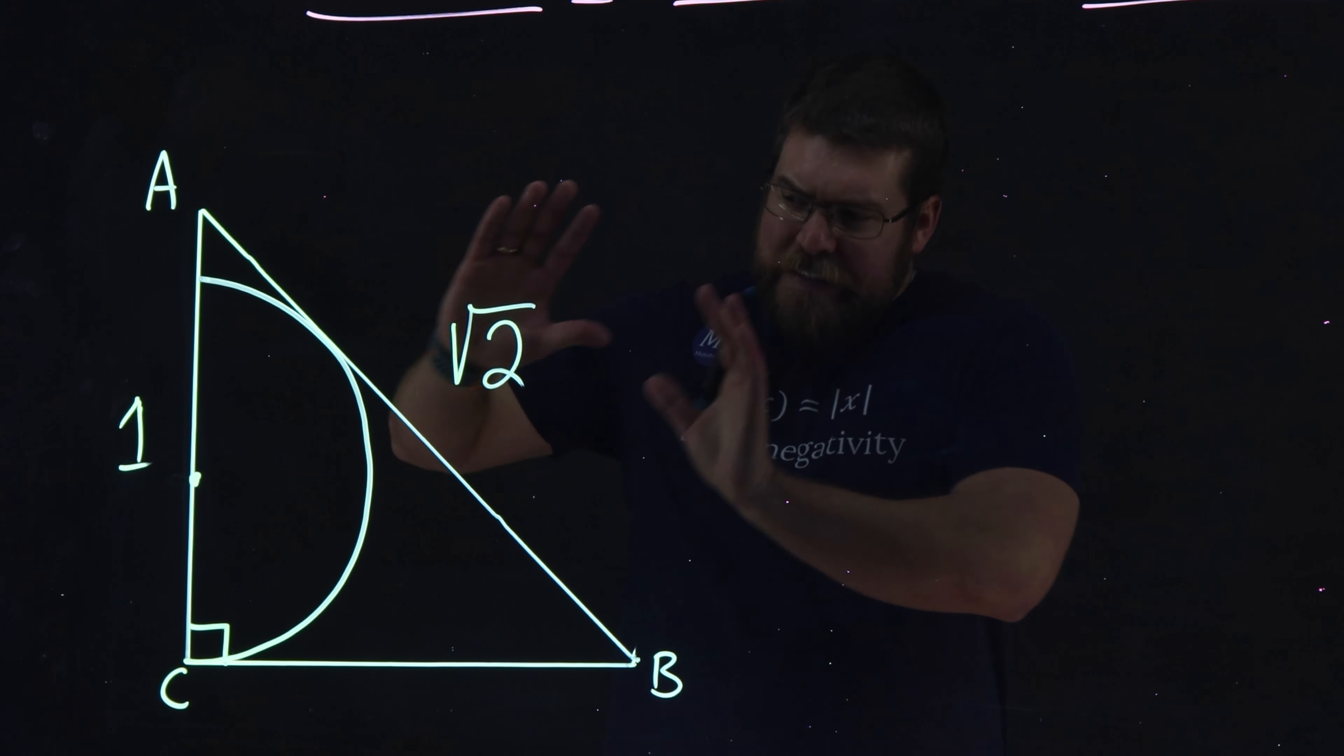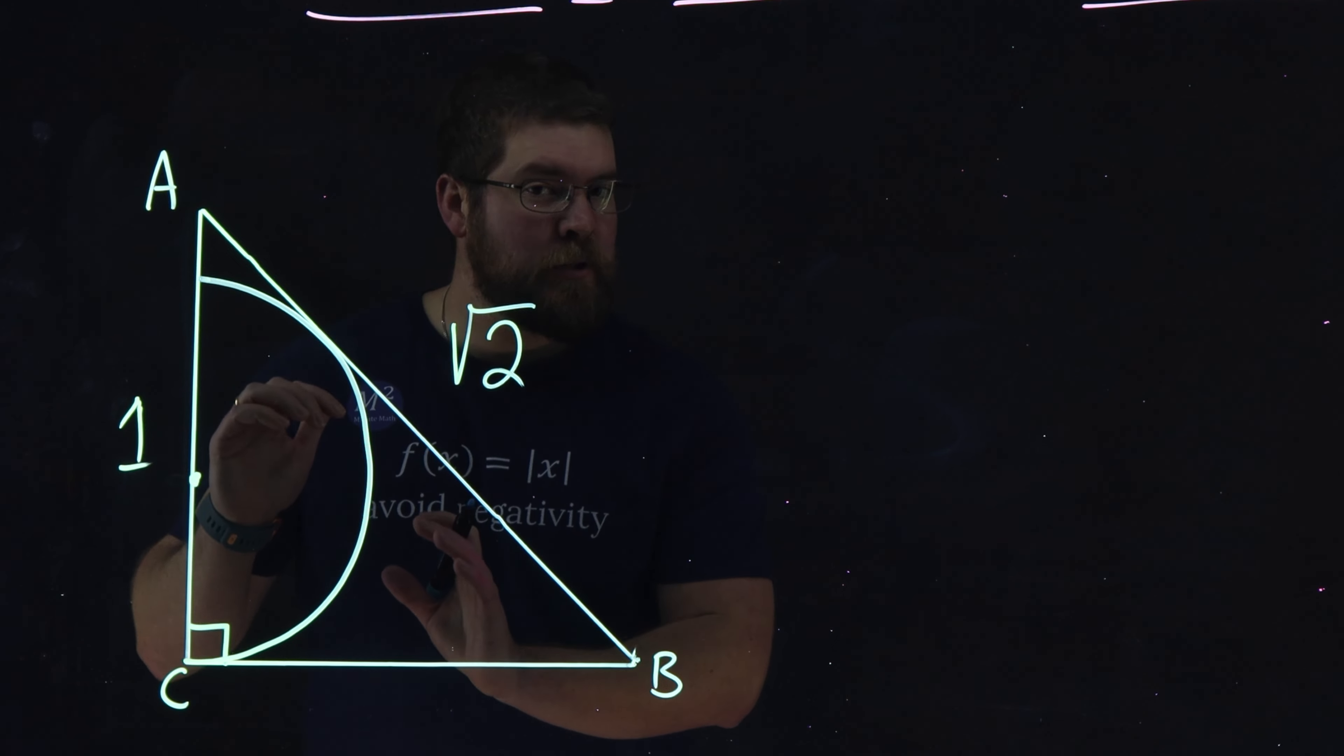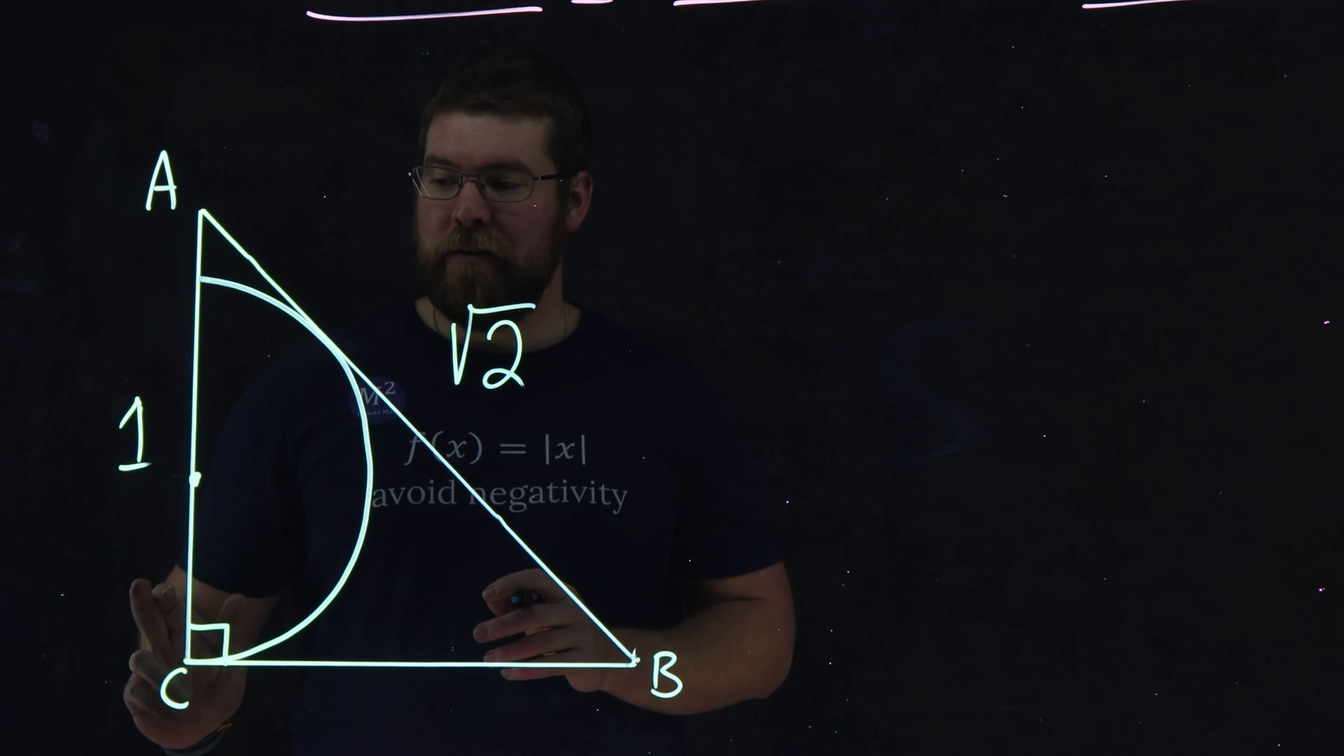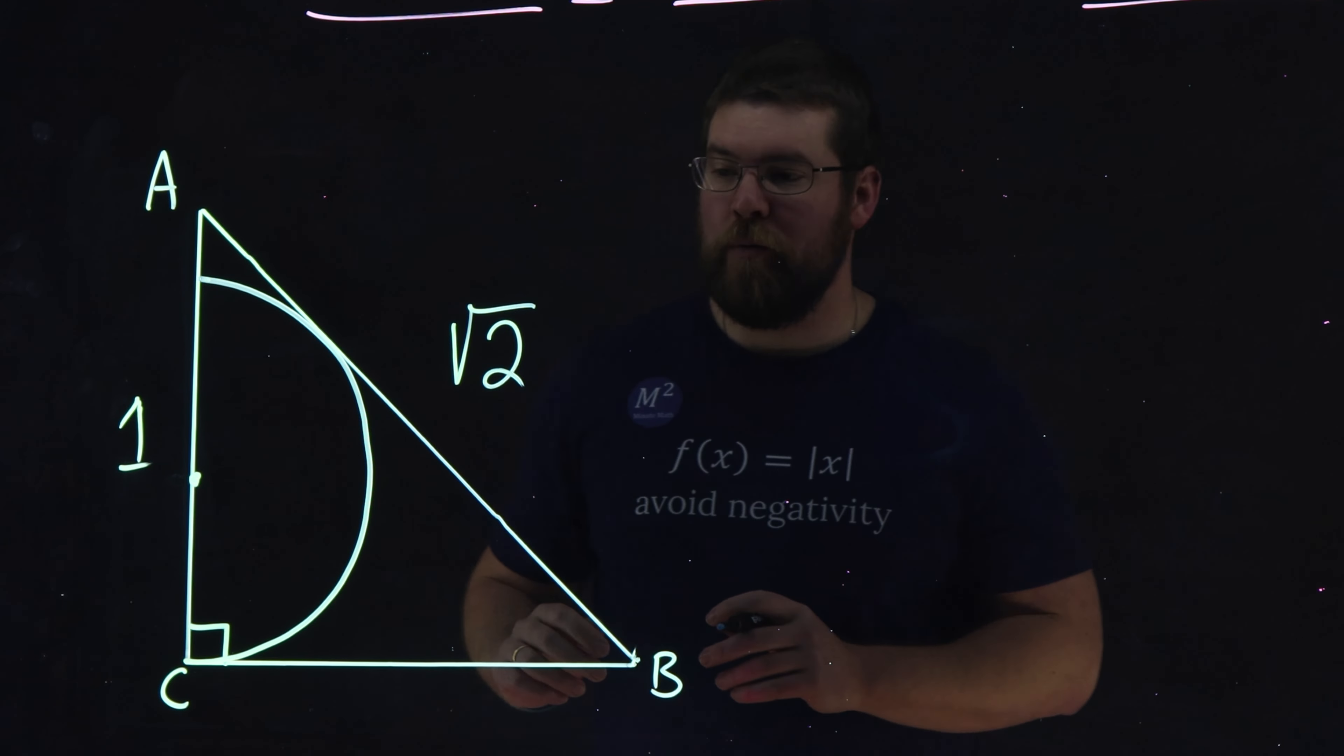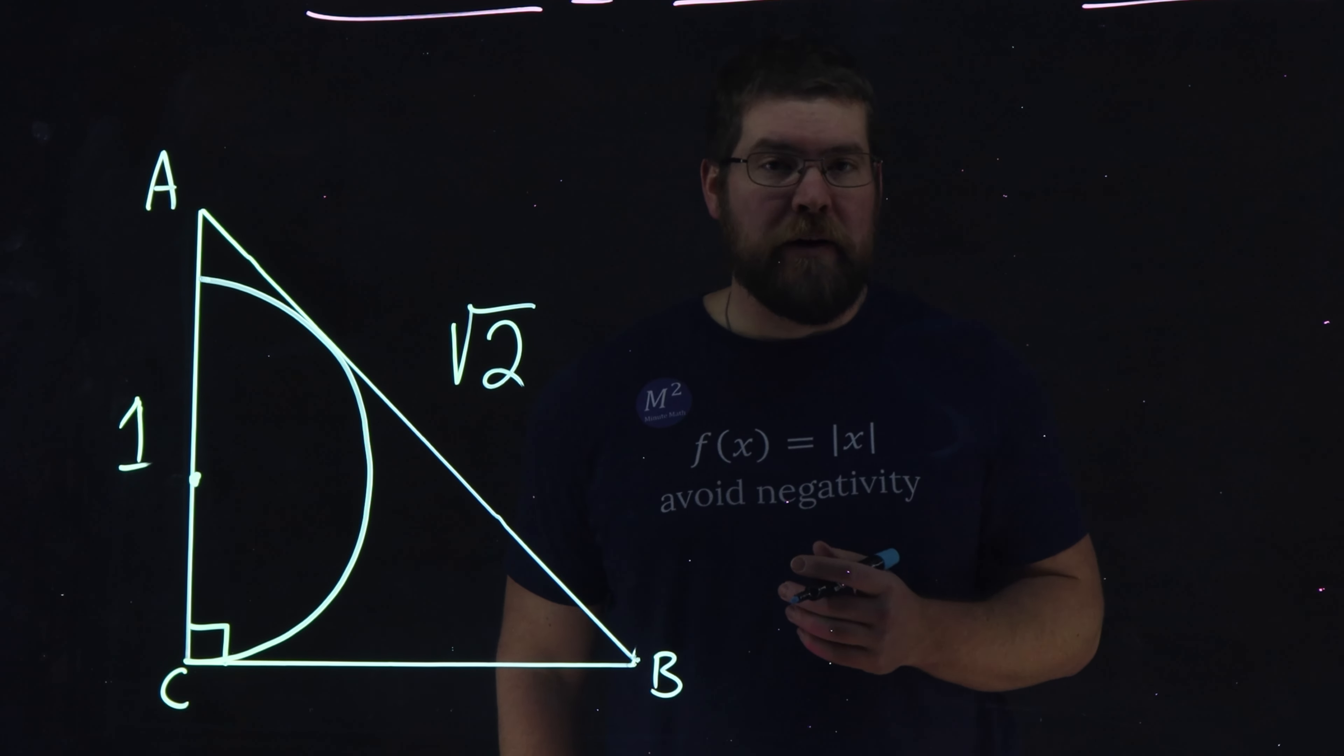We see the image here. We got a semicircle inscribed in the right triangle. We have AC has the length of 1, and AB has the length of square root of 2, and we want to find the radius of that semicircle.